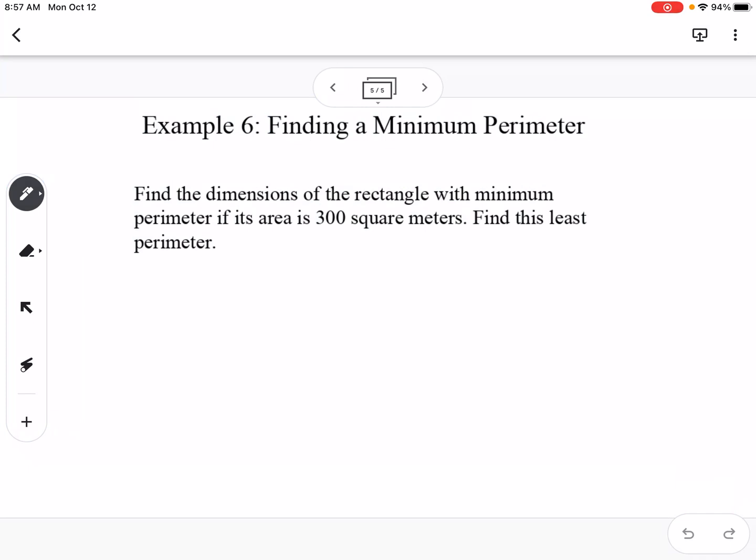Our last example here is finding a minimum perimeter, so this is an application problem. It says to find the dimensions of the rectangle with minimum perimeter if its area is 300 square meters. Find the least perimeter. So we remember that perimeter is 2 times the length plus 2 times the width, and area is length times width.